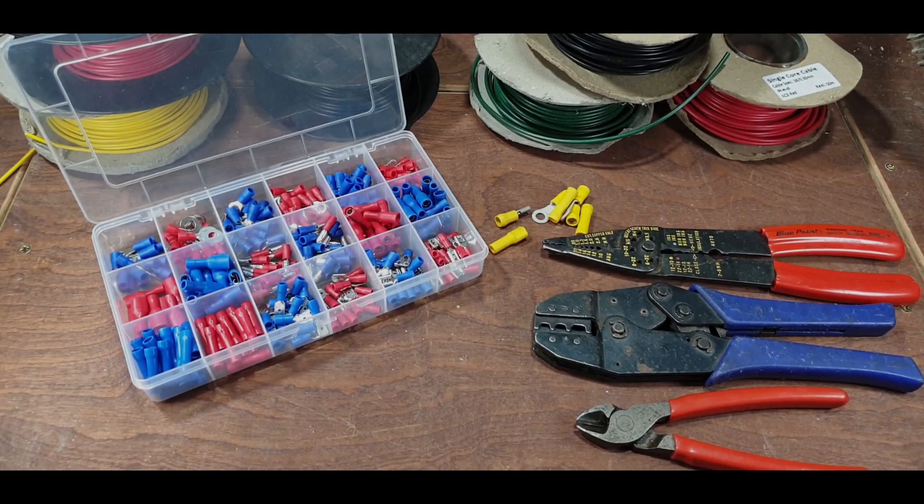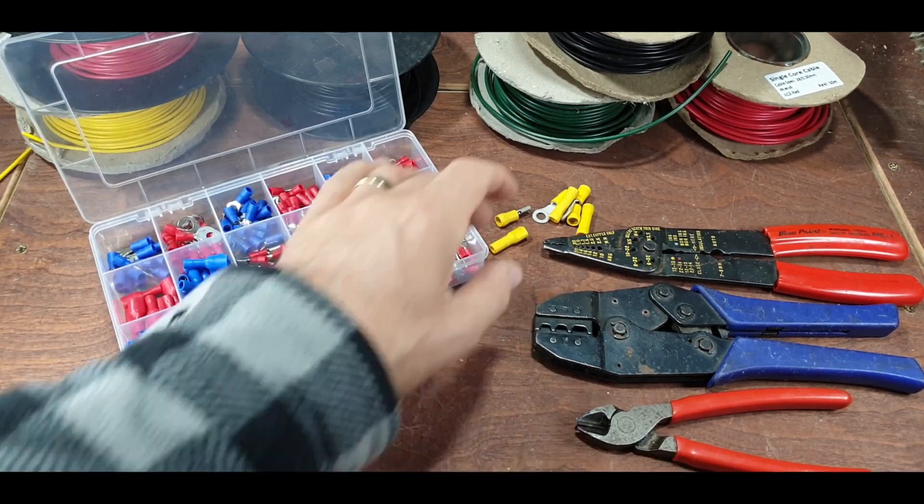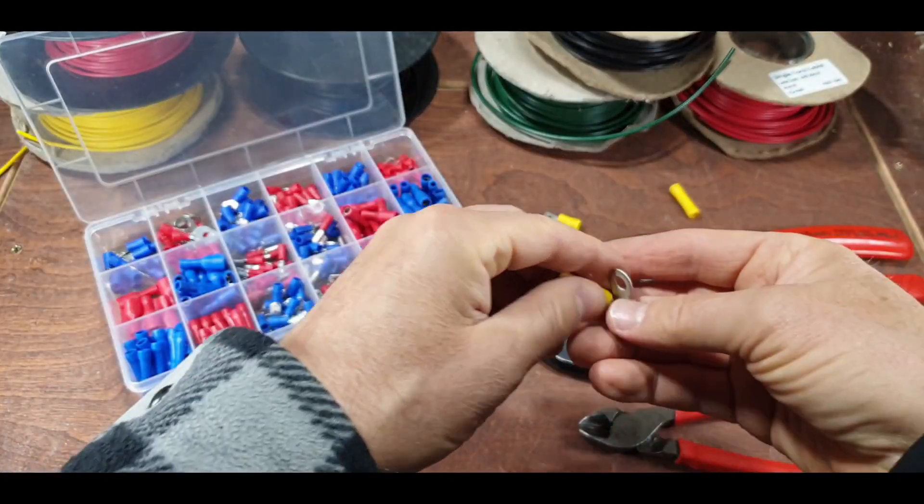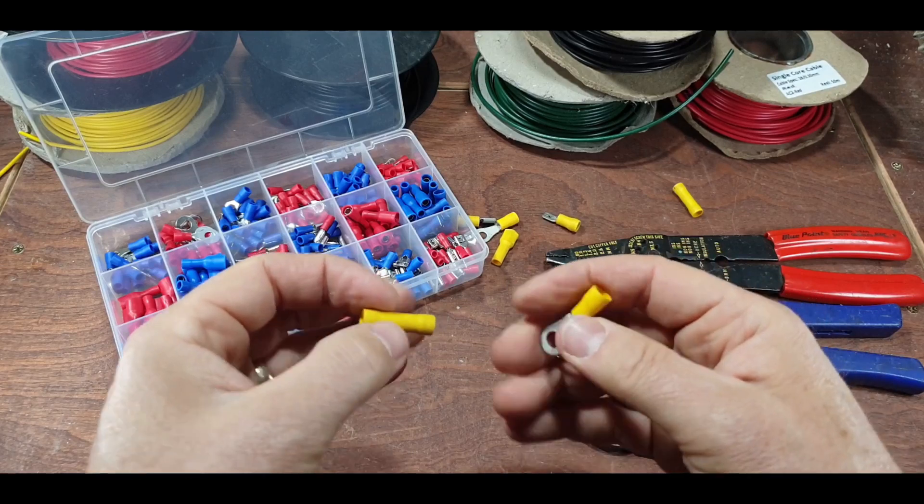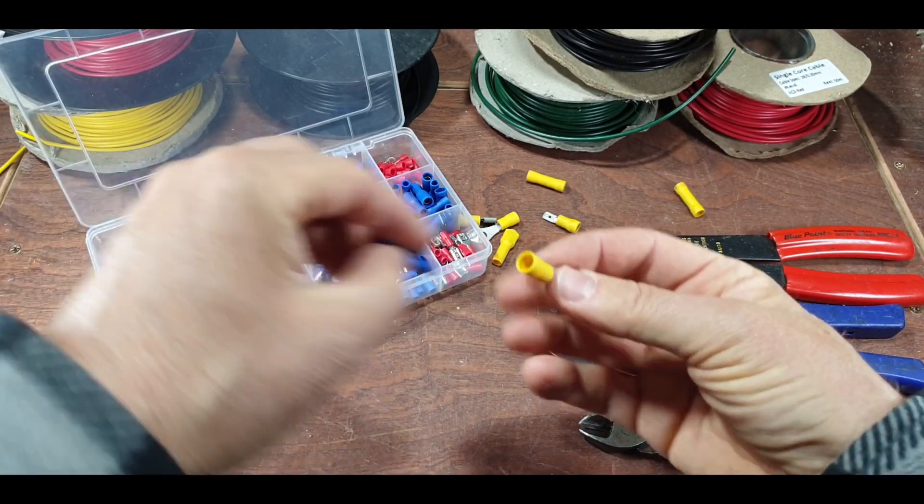Right, let's take a look at electrical connectors. Blue and red are the most common that you'll see. Sometimes you'll see these yellow ones. It's the size—these are a lot bigger than the blue.